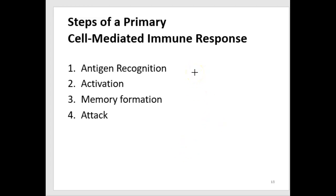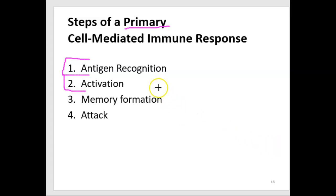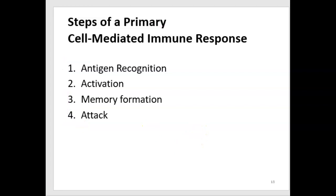Let's look at what happens during a cell-mediated immune response when you're first exposed — the primary response. The first thing is that the antigen has to be recognized, then whichever type of T lymphocyte recognizes it is activated. That's as far as it goes for cytotoxic T cells — they do their killing and they're done. But if it's a helper T cell that has recognized an antigen, the activation will cause both memory formation and an attack.